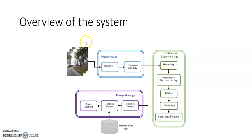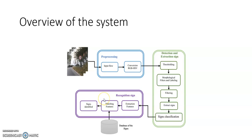Here is the overview of the system. An image containing a traffic sign will undergo pre-processing and conversion to HSV color space. Then it will undergo detection, where it will go through thresholding, morphological filters, and filtering. The sign will be extracted and sent to the recognition part. In the recognition part, features will be extracted and matched to the images in the database, and the most closely matched class will be outputted.